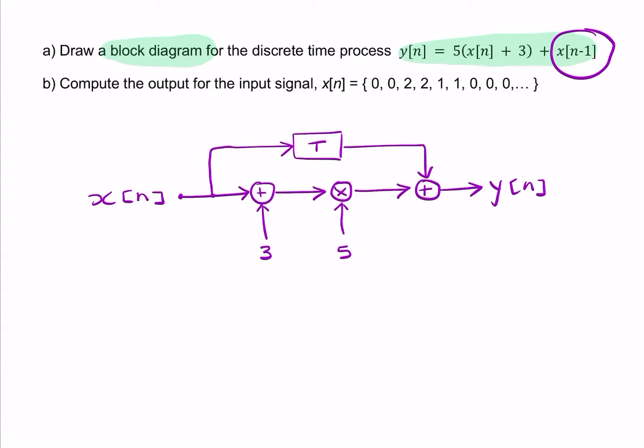Then we add that to the output of this multiplication, and that will give me my final answer, which is my output y of n. So this is my output, and the output should match that.